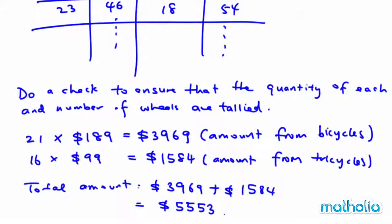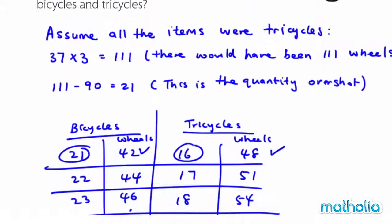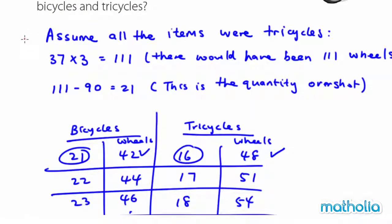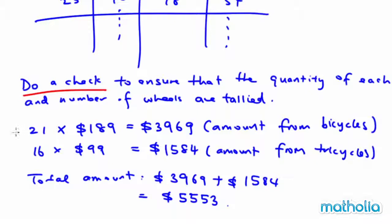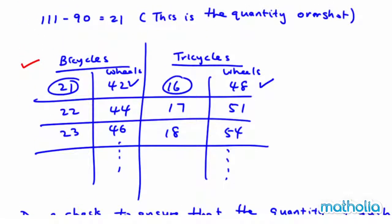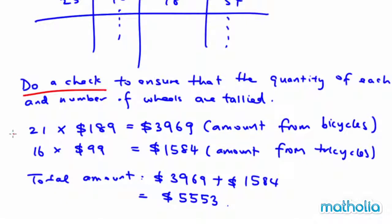As a student, what must you present in your answer? First, state why you made that type of assumption. After that, draw a table to show how you concluded 21 bicycles and 16 tricycles. Then always do a check to make sure your guess and check tallies with the question — for example, 16 and 21 give 37, and the number of wheels 42 and 48 give 90. Once confirmed, calculate the cost of each bicycle and tricycle, then write a concluding statement, which is important. That will complete the whole question.